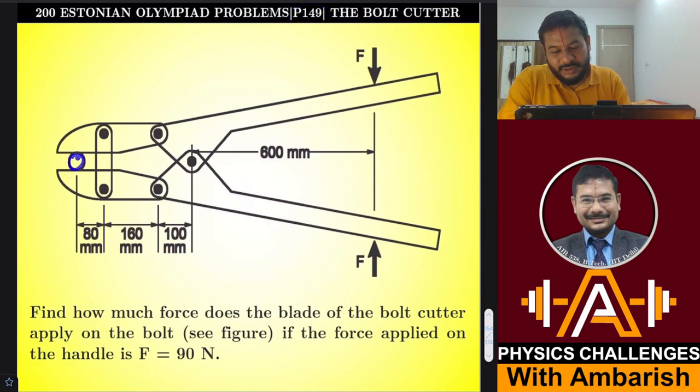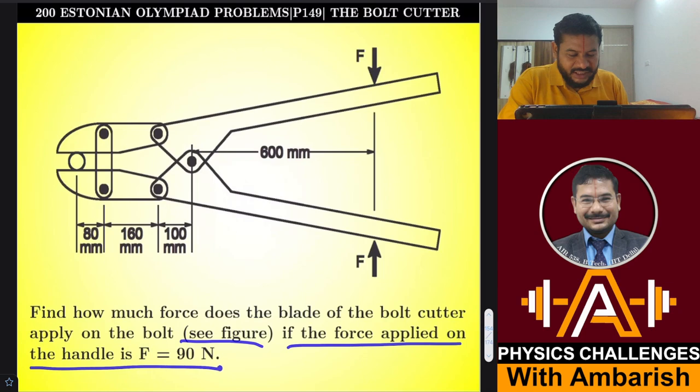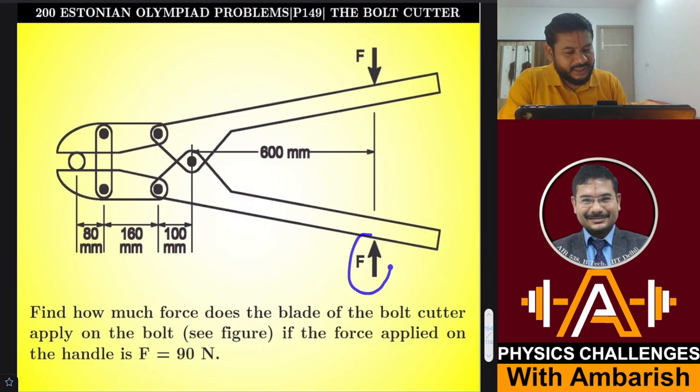This one is from the Estonian Olympiad collection, 200 Estonian Olympiad problems. This is problem number 149 about a bolt cutter. We are trying to press something in the jaws of a bolt by applying force over here. Let me formally read out the problem: find how much force does the blade of the bolt cutter apply on the bolt if the force applied on the handle is F equals 90 N. So we are applying 90 N from both sides, and we have to find out the force applied on this bolt in the jaws.